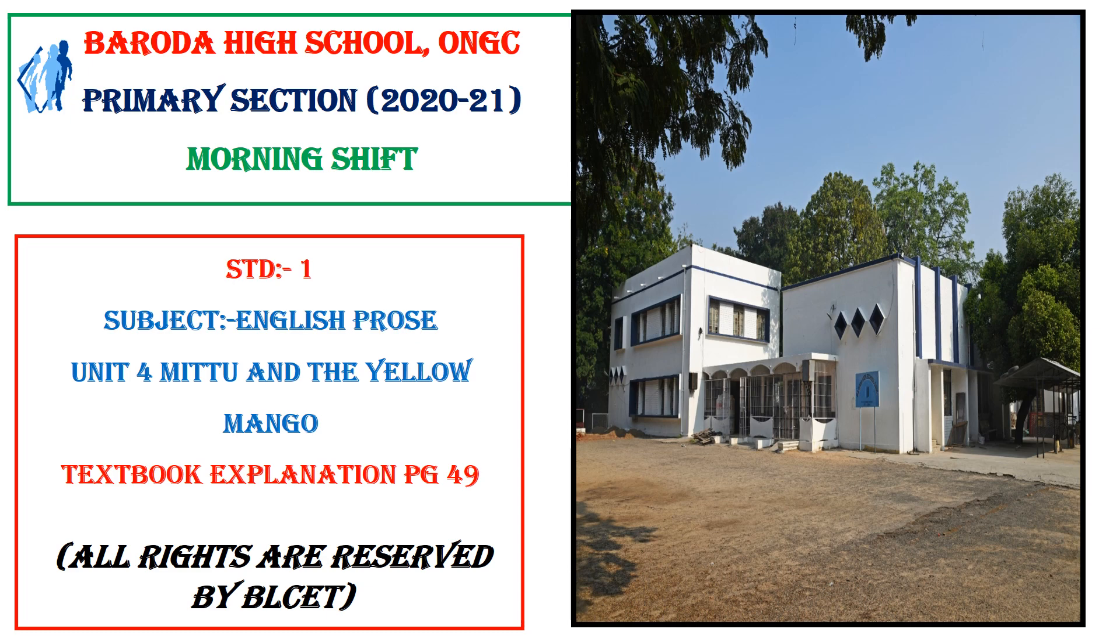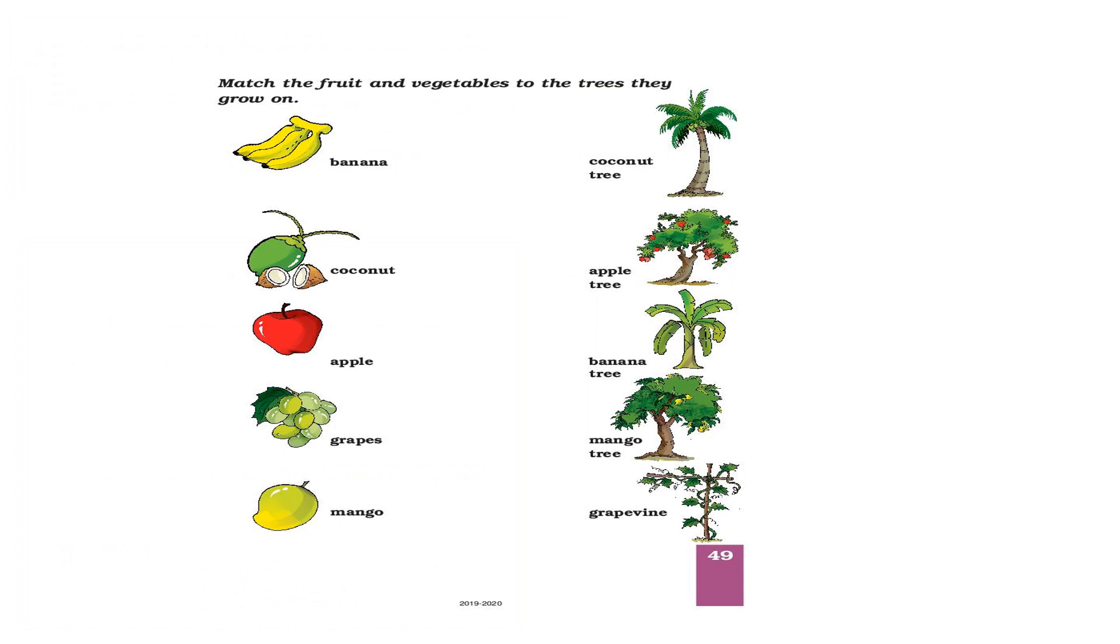Hello children, today we are going to discuss the textbook exercise for the lesson Mittu and the Yellow Mango. Let's start. In this slide, let us match the fruit and vegetables given here with the trees. Okay, let's do this.